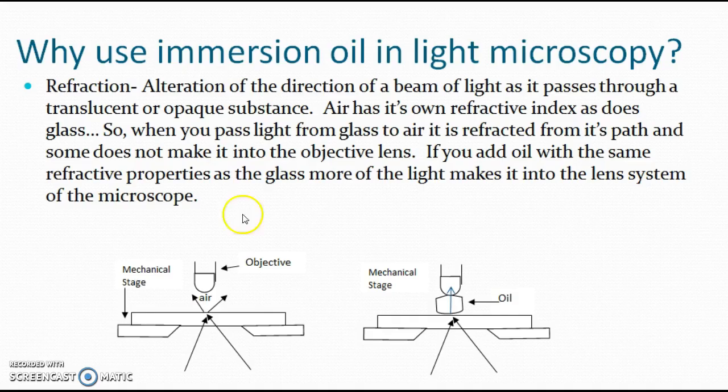As the light passes through the glass of the slide and hits the specimen laying right on top of that, if it hits air it has a different refractive index and it moves, so you're losing some of those light waves.